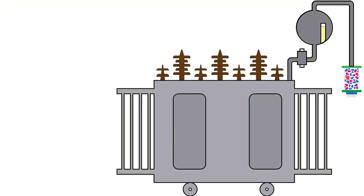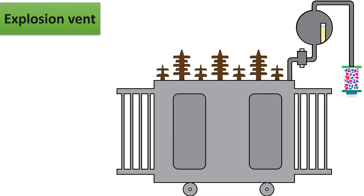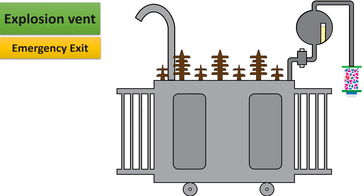The next important protective component is the explosion vent, provided on the top of the transformer, positioned slightly higher than the conservator tank. The purpose of this explosion vent is to provide an emergency exit for oil or gases in the transformer. In case of any fault condition, sudden pressure is created due to released gases or expansion of oil. To release that pressure, the explosion vent is provided. When too much pressure is created, the diaphragm inside the explosion vent ruptures, and oil and gas can be released through it, protecting the transformer from further damage.